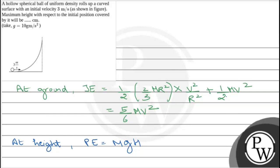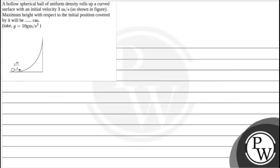So potential energy equals m times 10 times h. Now we apply conservation of mechanical energy, where energy at ground equals energy at top or at height. So ground total energy came out to be 5/6 mV squared